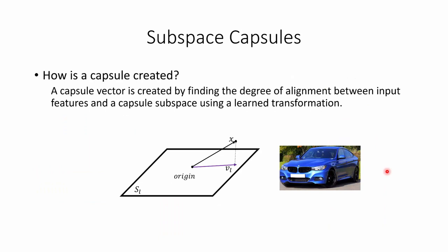When these capsule subspaces are learned, we can create the actual capsule vector by finding the degree of alignment between the feature of that sample and the capsule subspace using a learned transformation. As you can see here, we have a subspace for class car, and this is the feature extracted from this sample. The actual capsule corresponding to this sample can be created by projecting this feature vector onto this subspace.